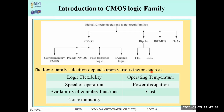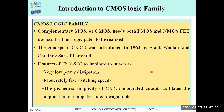Complementary CMOS logic family — also called Complementary MOS — requires both a PMOS FET and an NMOS FET for its logic gates to be realized. The concept of CMOS was introduced in 1963 by Frank Wanlass and Chih-Tang Sah of Fairchild Corporation, which also introduced the 741 IC op-amp.